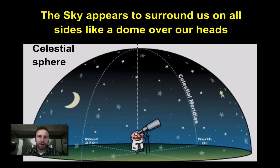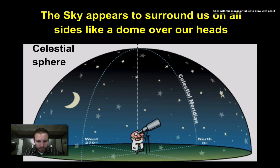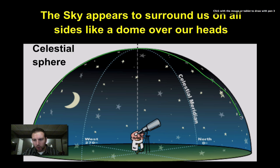The celestial sphere is the backdrop that everything appears in, either the nighttime or the daytime sky. If you take a look, we have this little gentleman right here looking through a telescope, and all the stars appear to be on this dome that surrounds us.